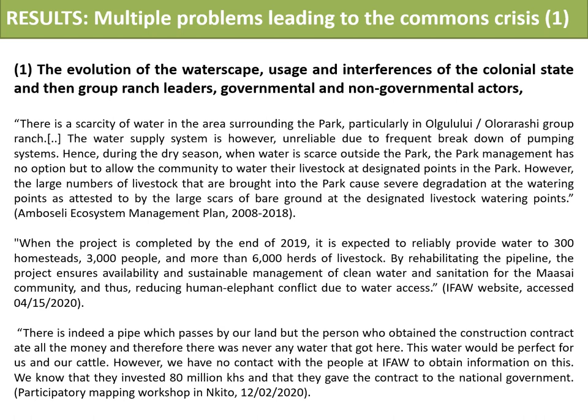The current interference can be illustrated by a recent example linked to the policy of rehabilitating the Nauru Nkare system, or the northern pipeline. In 2008, during the implementation of an ecosystem management plan for Amboseli, the Kenyan Wildlife Service stated there is a scarcity of water in the area. The water supply system is, however, unreliable due to frequent breakdown of the pumping system. They included in the same document, as a central action point, the rehabilitation of this water supply system. This project was to be carried out by IFO, an international conservation NGO and KWS partner in the Olgolului-Ororashi group ranch for the management of wildlife and their habitats. The information available on IFO's website states, in an article dated from November 6, 2019, that the rehabilitation should be completed successfully at the end of 2019, bringing water to the Maasai community.